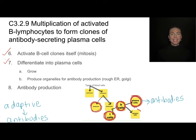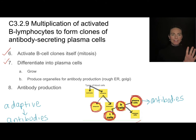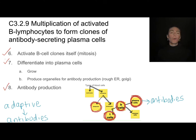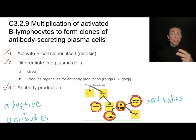The idea of memory cells is a higher level topic, so we'll leave that for now. The whole goal of antibody production required a lot of interaction and interdependence between different types of cells within our immune system.